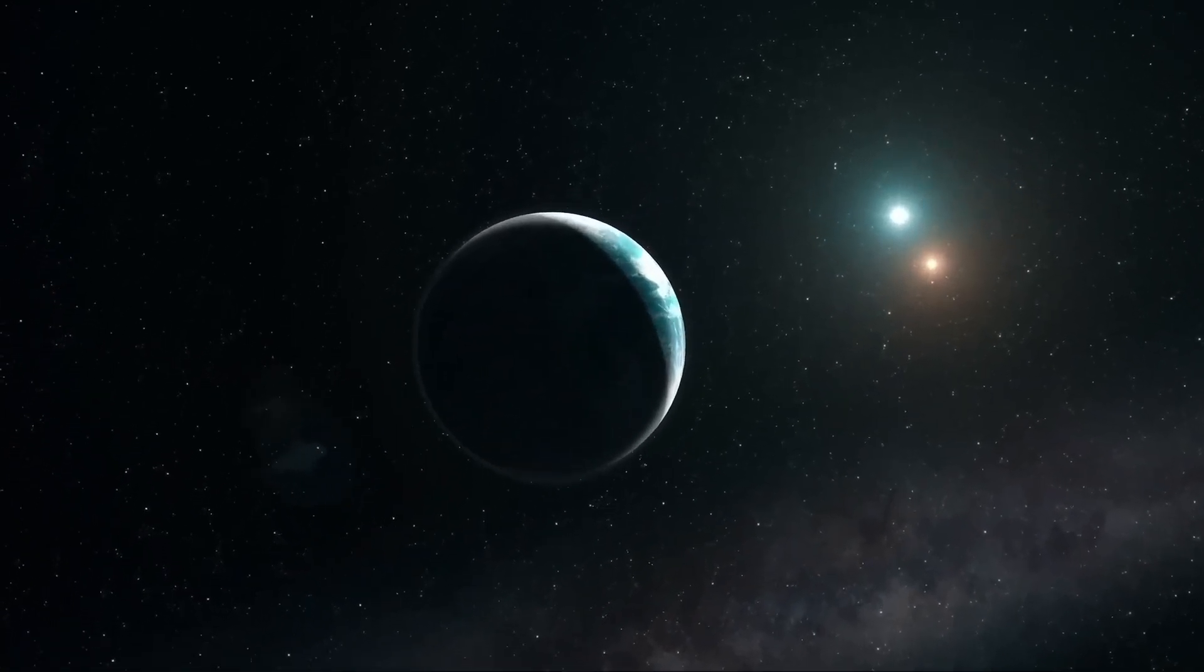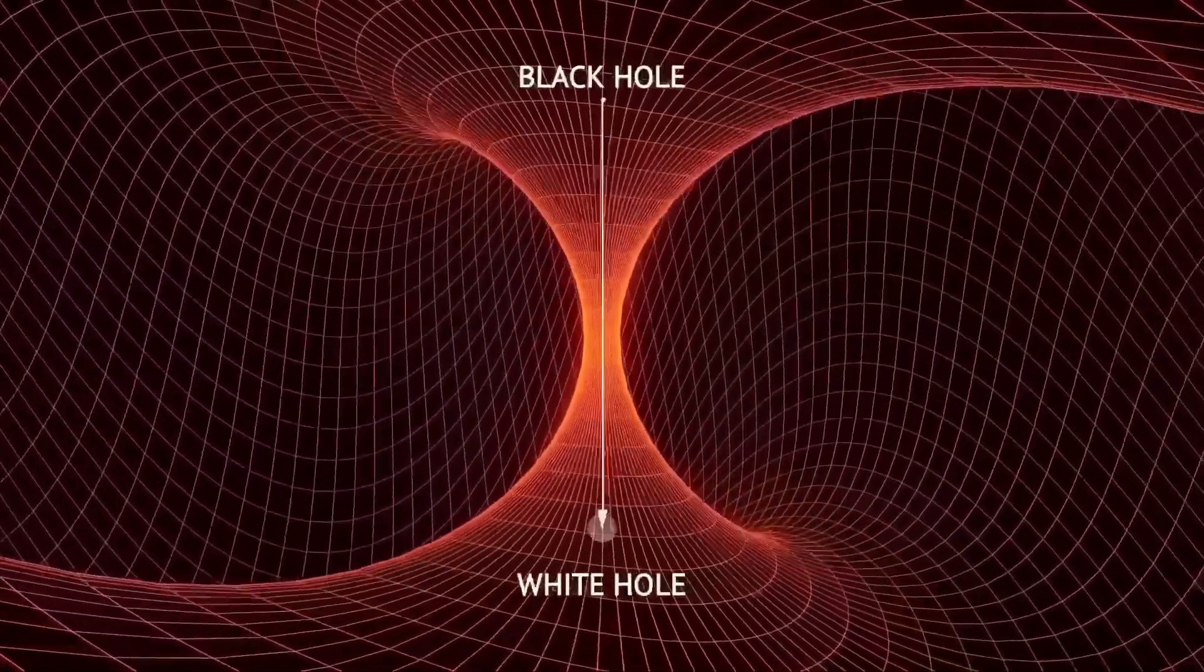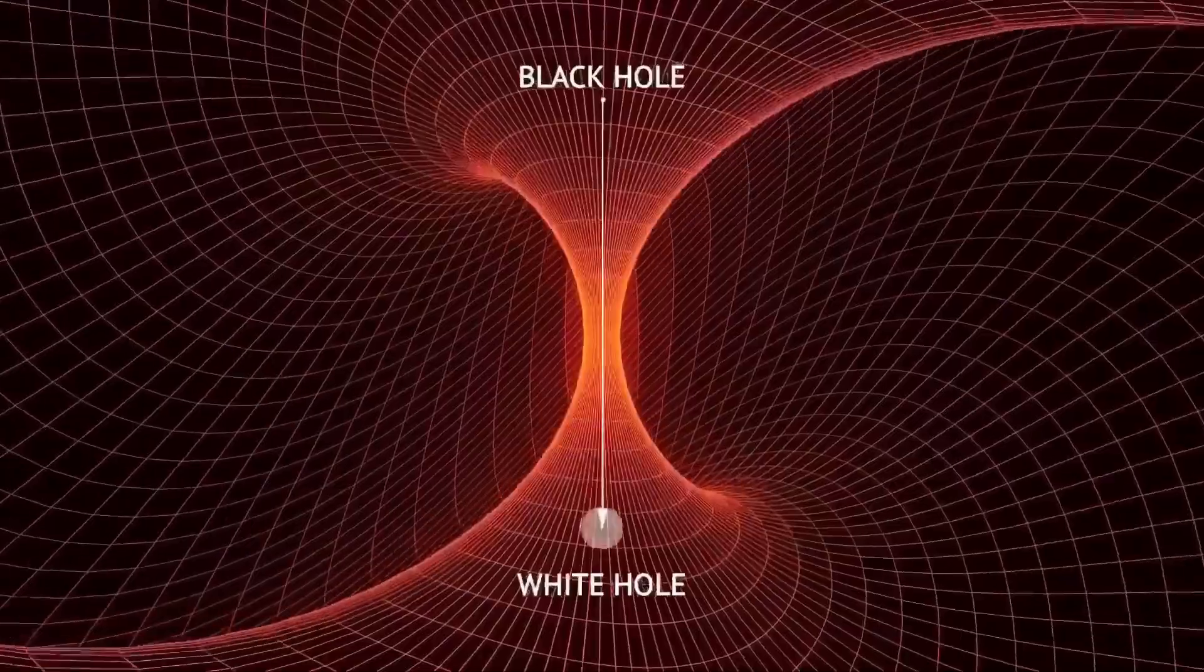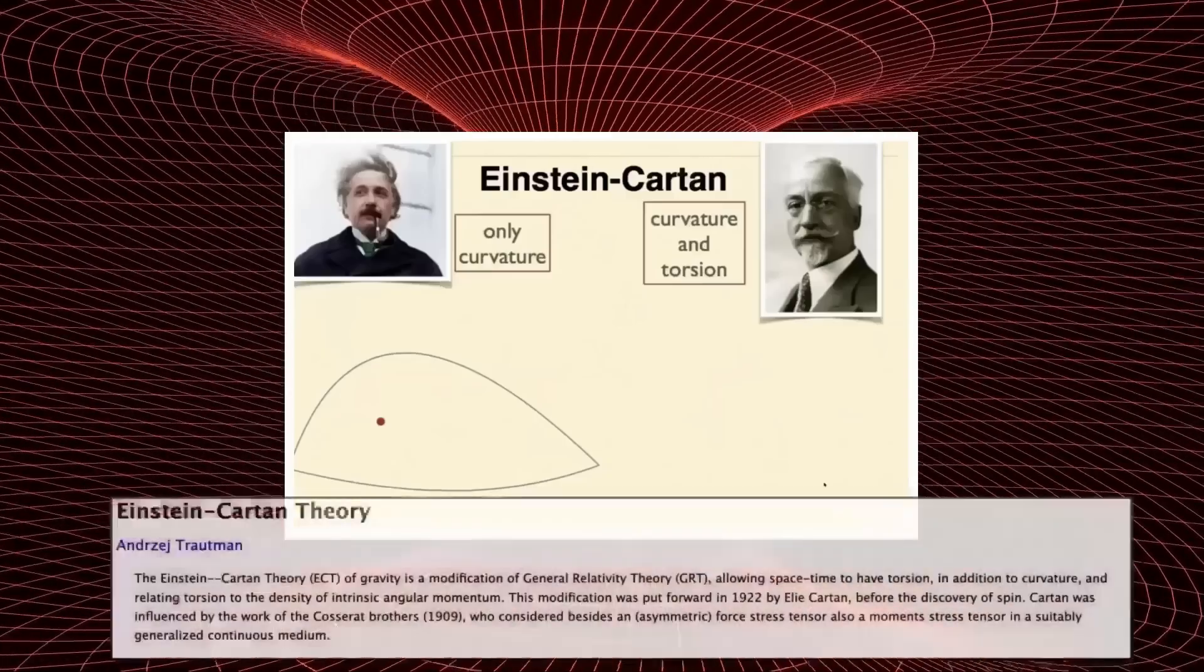Some theories suggest that this twisting effect of space-time could generate a repulsive force at extremely high densities, potentially preventing singularities from forming. If true,